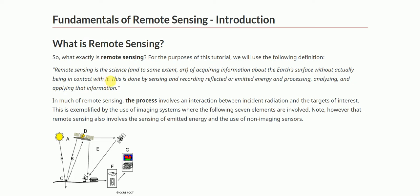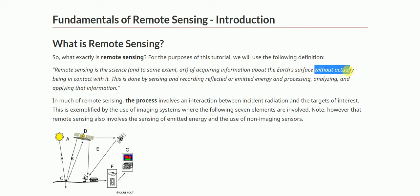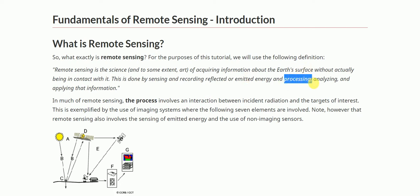Remote sensing is the science of acquiring information about the earth's surface without actually being in contact — specifically, the science of acquiring, processing, and interpreting images that record the interaction between electromagnetic energy and matter.